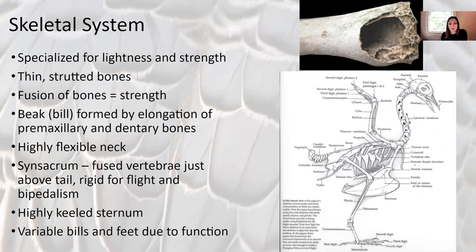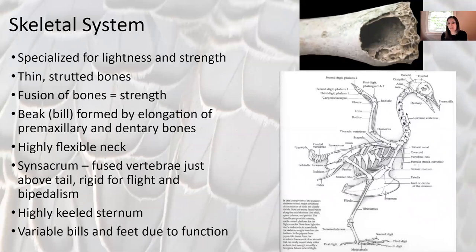The synsacrum also provides the strength needed for flight. Birds have a highly keeled sternum — think about your own sternum, which is nice and flat. Birds have this keeled sternum that allows for all the muscle attachment needed for flight. Variable beaks and feet are seen across different species of birds and are adapted for different functions.